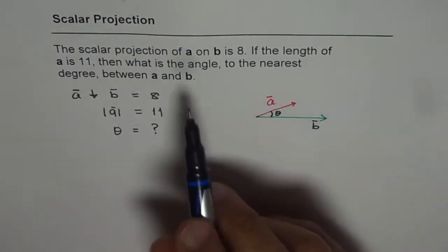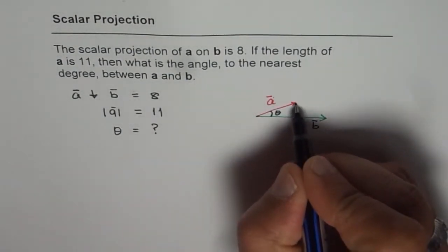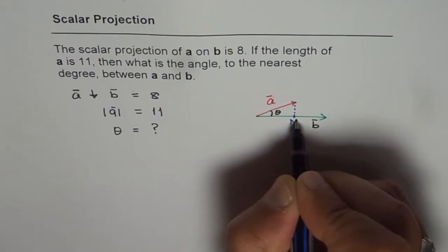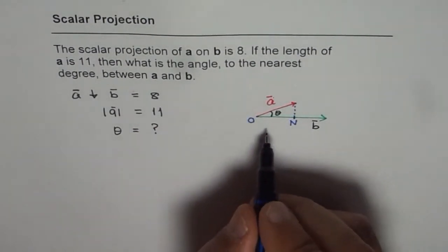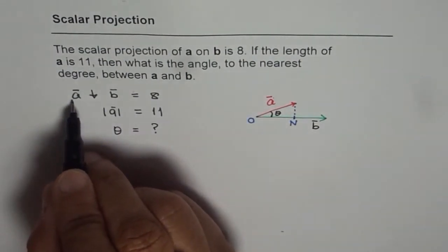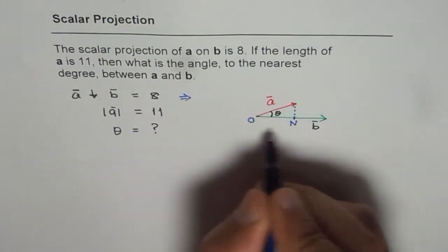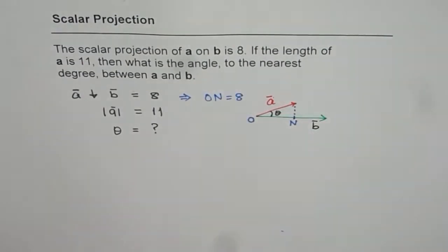When we say that the scalar projection of A on B is 8, we really mean that if I drop a perpendicular from here, let us say this point is N and let us say this point is O, then ON is equal to 8. So when we say scalar projection of A on B is 8, that implies that from our diagram, ON equals to 8. That is what it means.